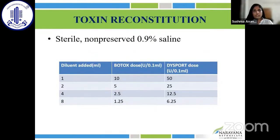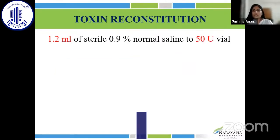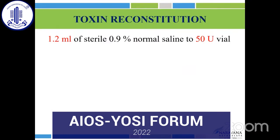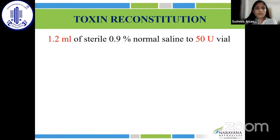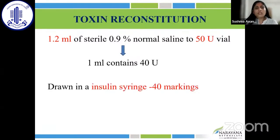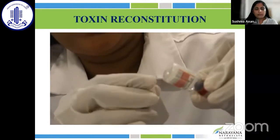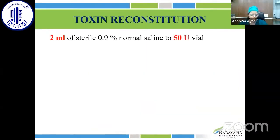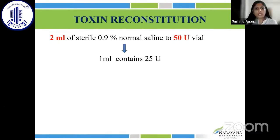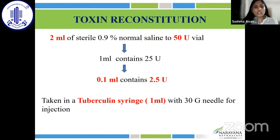Botulinum toxin type A has to be reconstituted — it comes as a white powdery substance and must be reconstituted with sterile non-preserved 0.9% saline. One method: inject 1.2 ml of sterile saline into a 50-unit vial, making 1 ml containing 40 units, drawn in an insulin syringe with 40 equal markings where each marking corresponds to one unit. Another method: inject 2 ml of saline into a 50-unit vial, making 1 ml containing 25 units or 0.1 ml containing 2.5 units, taken in a tuberculin syringe with a 30-gauge needle.